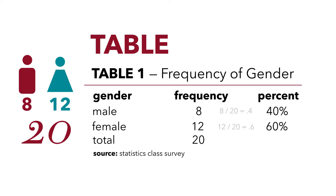We now have a table that is referred to as a frequency table, which gives us a lot of information about this variable, Gender. It tells us how many males there are, how many females there are, what percentage males make up, and what percentage females make up.